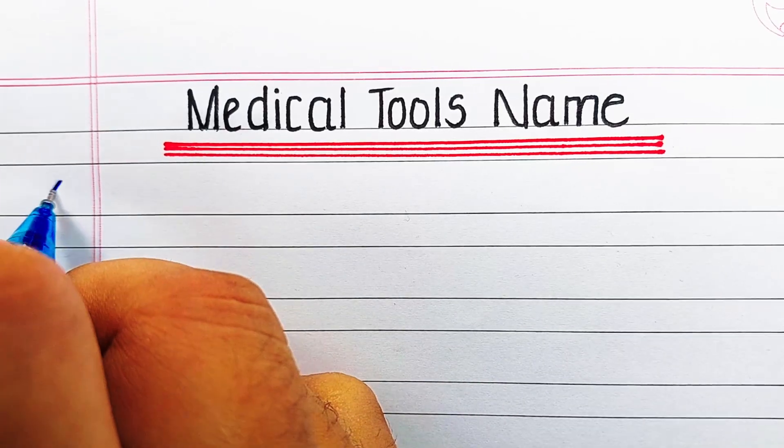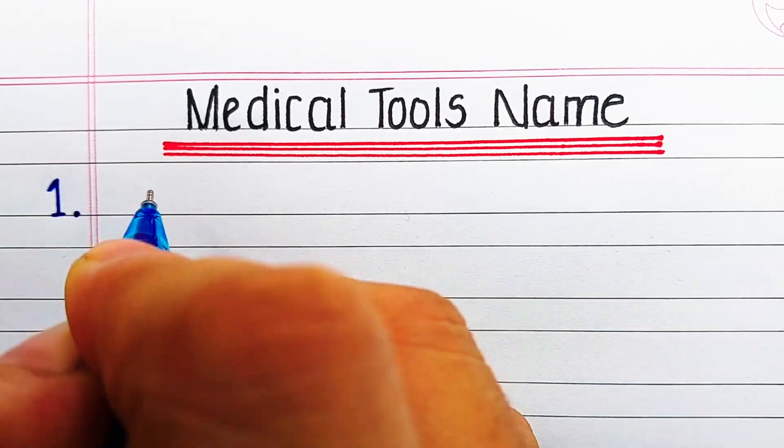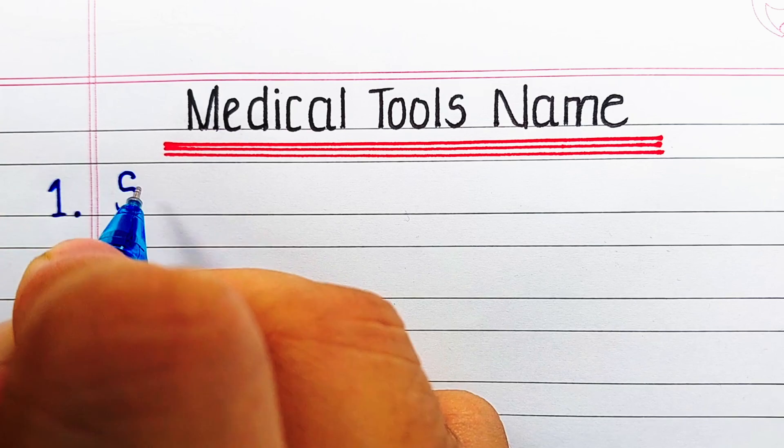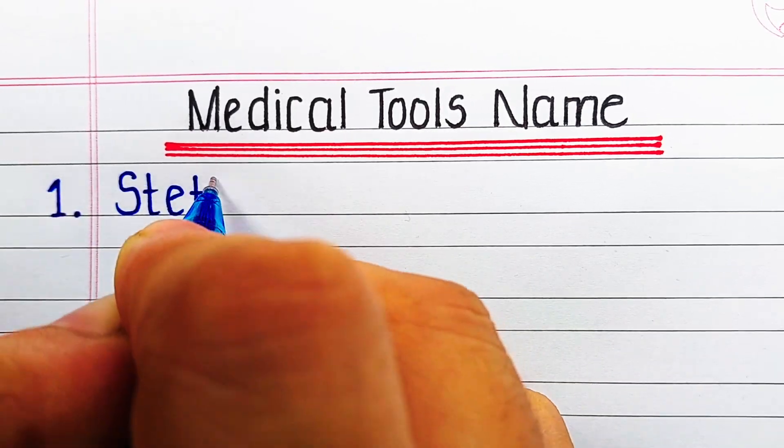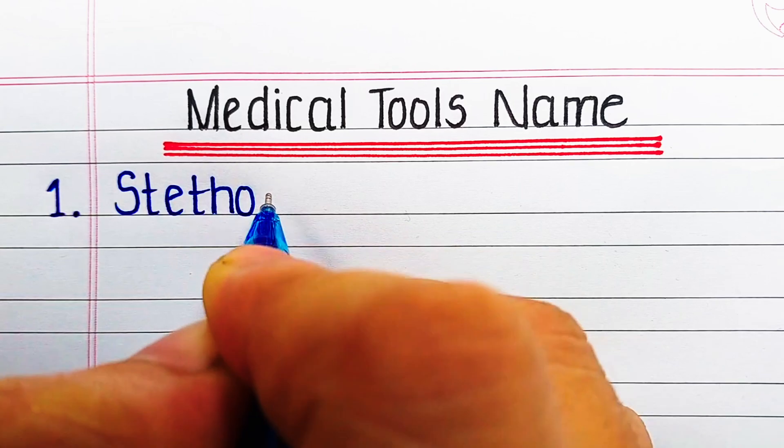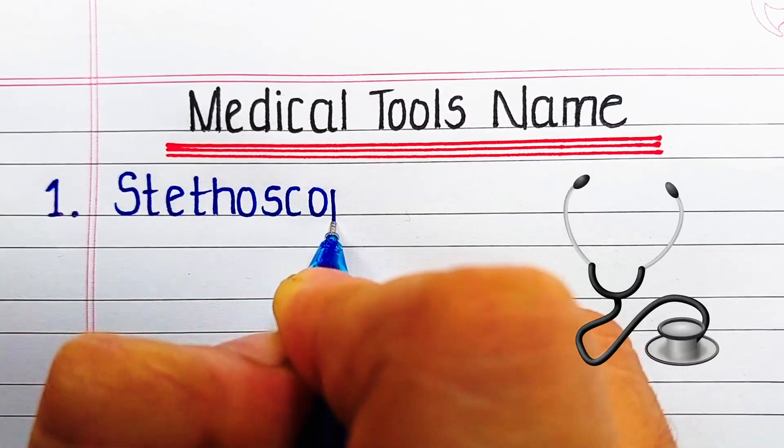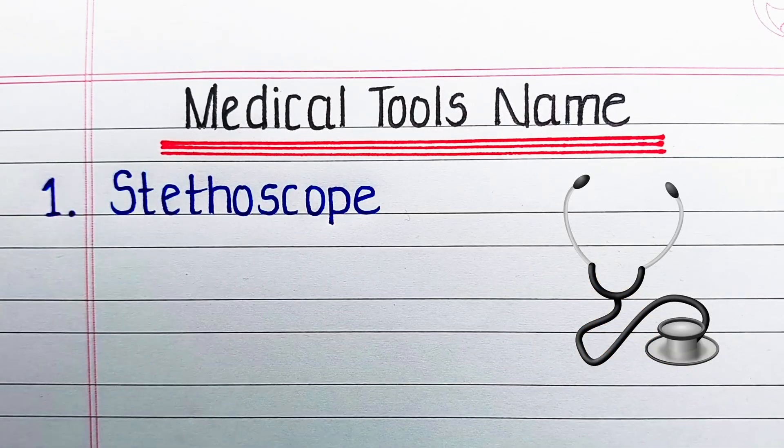Hello viewers, welcome to our channel Try to Learn. In this video we will learn and write names of medical tools in English. We will also see their pictures. First one is stethoscope.